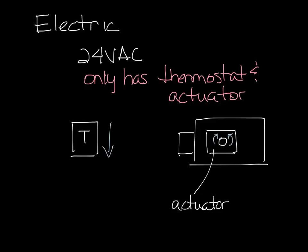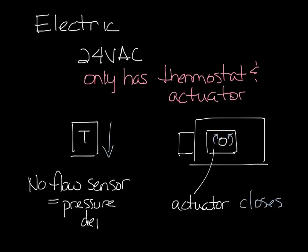So when the thermostat senses a reduction in temperature, it drives the actuator closed. There is no flow sensor in an electric VAV box. So an electric VAV box system is pressure dependent. This means that changes in system pressure will change the amount of air flow you get out of your box. Because of this reason, electric systems are likely to have large room temperature variations and they're not used very often.